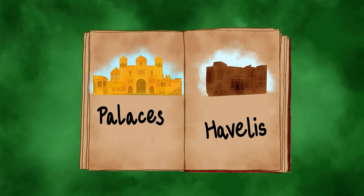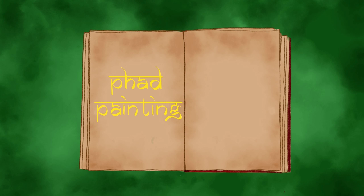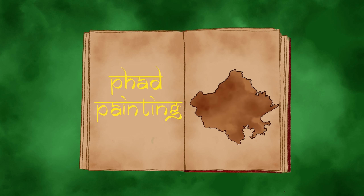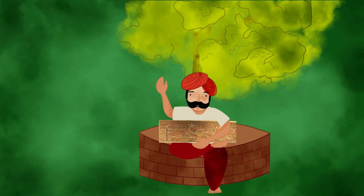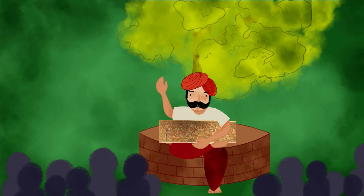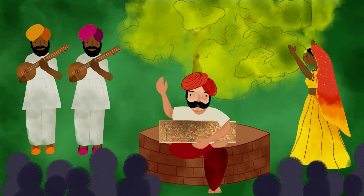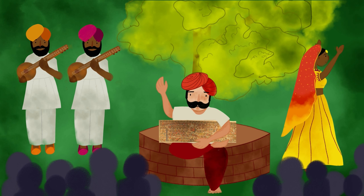Phad painting is a style of religious scroll painting practiced in Rajasthan. The paintings are traditionally done on a long piece of cloth or canvas known as Phad. Typically, stories of the folk deity Baba Ji and the Gurjar warrior Dev Narayan Ji are depicted in Phads. In ancient times, the storytellers would travel from village to village and narrate the stories using Phads as their pictorial depiction, with singing and dancing making an integral part of the storytelling experience.